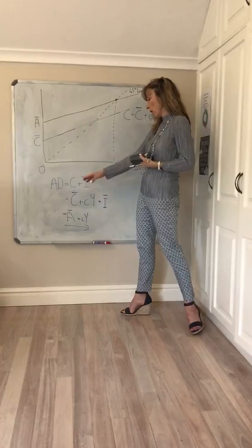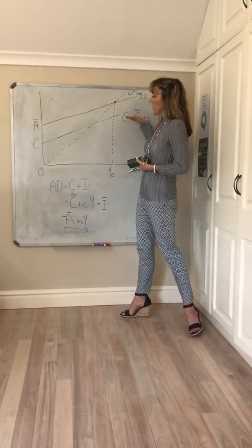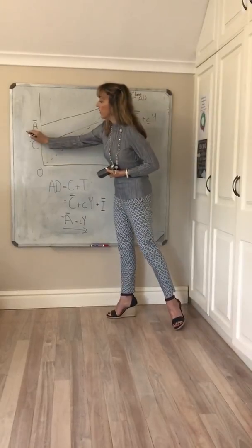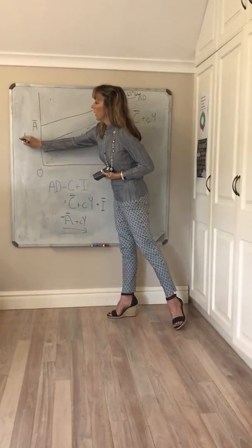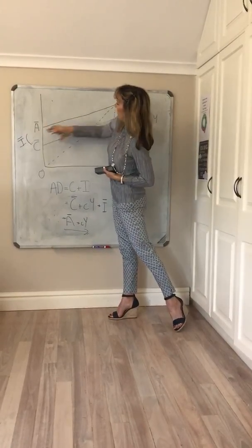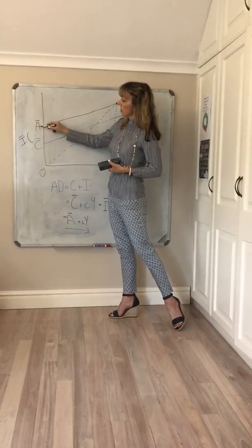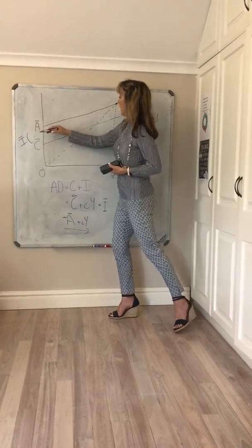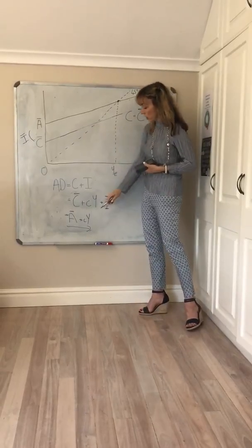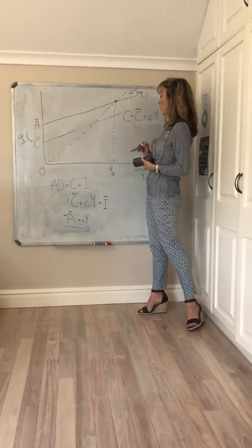So we've now got an expression for our aggregate demand curve. We've taken our consumption function and simply added autonomous investment, and the whole thing shifts up by the amount of autonomous investment. This is our new intercept, A-bar. The slope is the same as that for the consumption function — it's given by little c — so it's upward sloping.